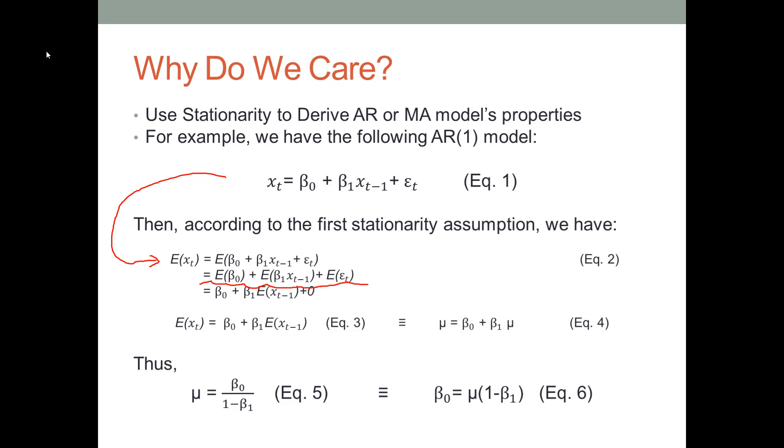β_0 is a constant. The mean of a constant is the constant itself. That's why E(β_0) equals β_0 itself. β_1 is also a constant, so we can take β_1 out of the mean operation. Then we have E(ε_t) equals 0. Why is that? We just said the mean of an error term in a linear model is 0.